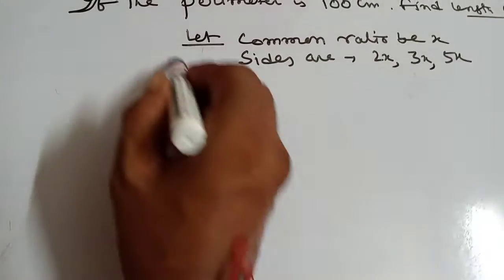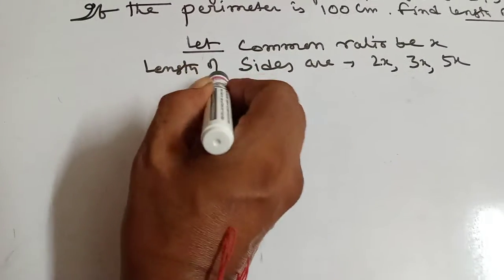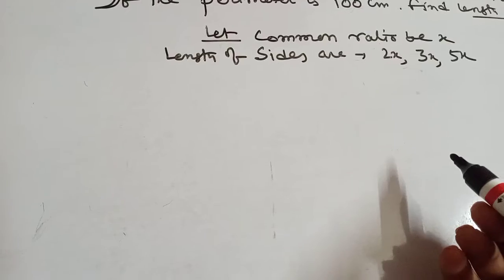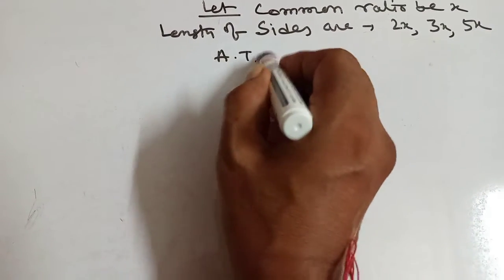Length of sides are 2x, 3x, 5x. Perimeter means sum of 3 sides. That means, ATP (according to problem).